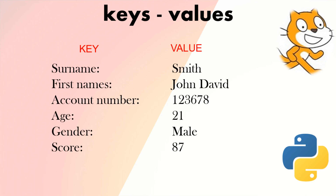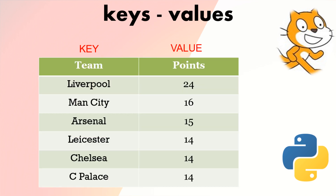Another example might be a form where we have keys like surname, first name, account number, age, gender, and score — labels we would see on a form. The values are what we enter in the form details, for example: surname Smith, first name John, age 21. In our league table example, the key would be the team name and the value would be the points.